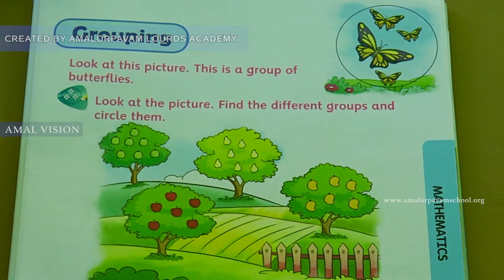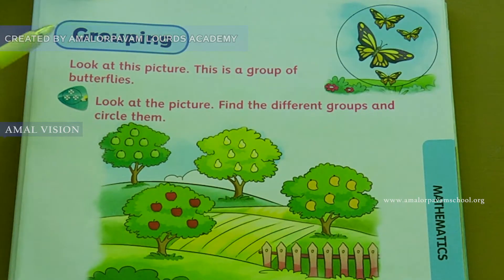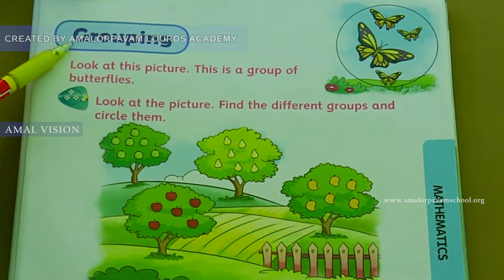Now, ma'am is going to give you a task. You have to do it at your home. When your mother goes to the market and buys some vegetables, you have to sort the vegetables and arrange them according to their group. This is your grouping activity. Now, we are going to complete our book activity. This is grouping. Look at this picture — this is a group of butterflies. This is called grouping.